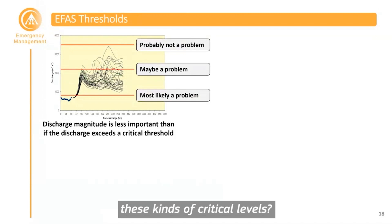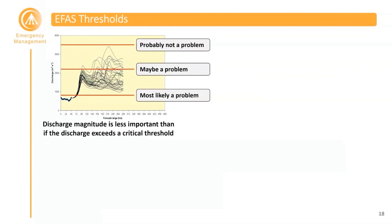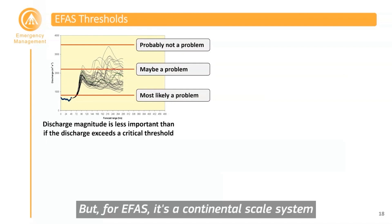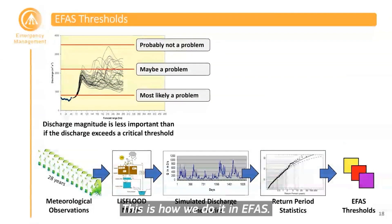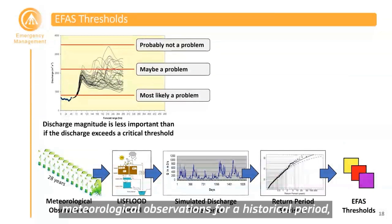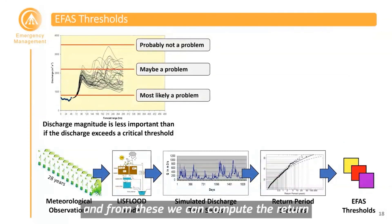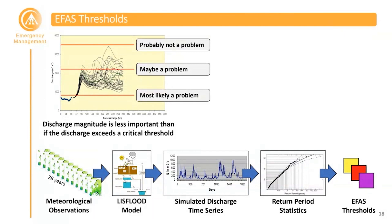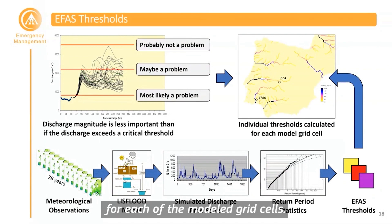At national institutions, critical levels are often linked to local phenomena, like a bridge being overtopped, a road becoming flooded, or a river reaching bankfull condition. For EFAS, as a continental-scale system, this information isn't available in a standardized format, so thresholds are derived differently. Meteorological observations for a historical period are used to run the LISFLOOD model, producing simulated discharge time series from which return period statistics are computed. EFAS uses the 2-year, 5-year, and 20-year return period thresholds, calculated individually for each model grid cell.